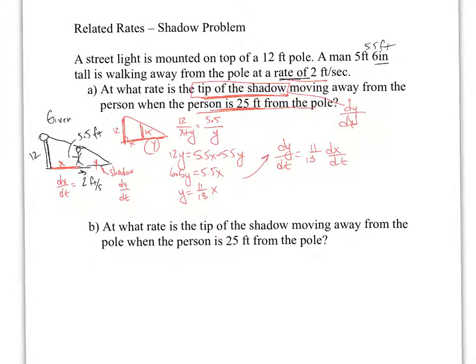We know what dx dt is. They gave us that it's 2. So, dy dt equals 11 thirteenths times our 2 feet per second, which gives me a value of 22 thirteenths feet per second. And this is approximately 1.6923 feet per second. Let's keep it as a decimal. Alright.